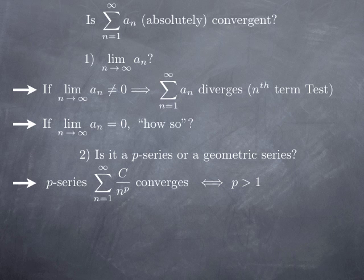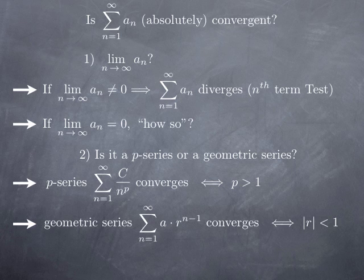A p-series is something like the sum of a constant over n to the p, where p is constant and n is the index of summation. Such a series converges exactly if the exponent p is strictly greater than 1; in other words, if it's less than or equal to 1, the series is divergent. A geometric series is something where you have a constant and then powers of a fixed number r, called the common ratio, and this kind of series is convergent exactly when the common ratio is strictly between −1 and 1, or in other words, its absolute value is less than 1.